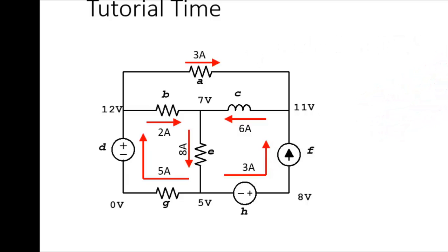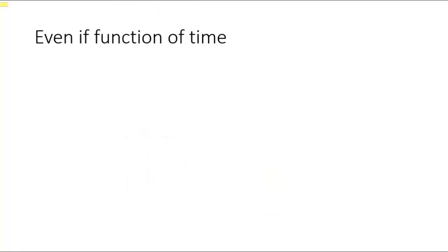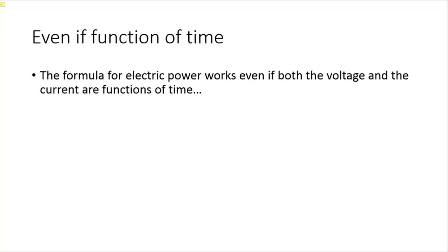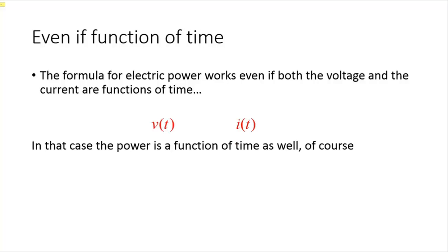I invite you to complete this exercise in your own time. Observe that we didn't impose any time-constancy constraint on either the voltage or the current. The VIP formula is valid even if the voltage is a function of time, or the current is a function of time, or both are. In that case, power is also a function of time.